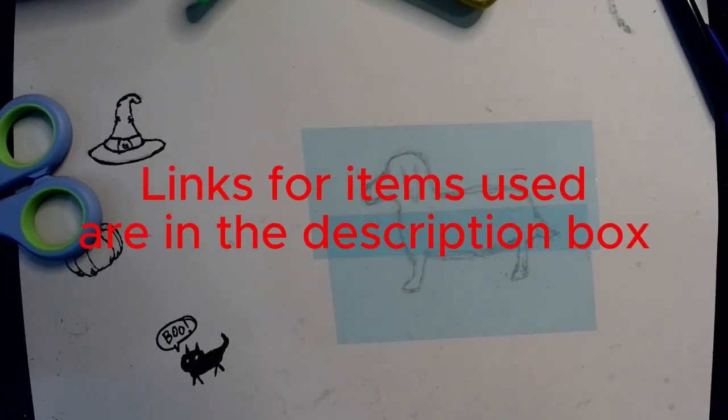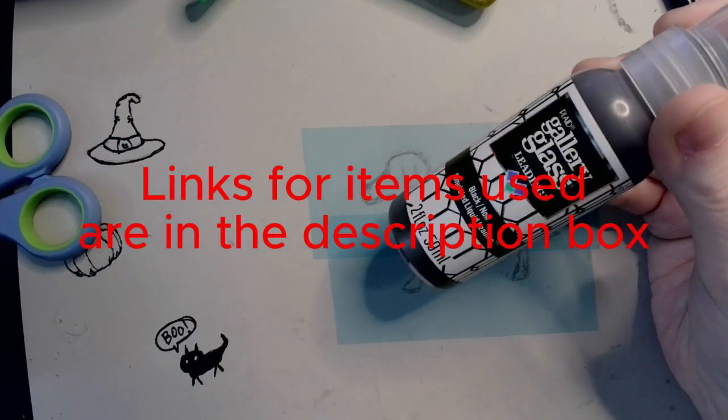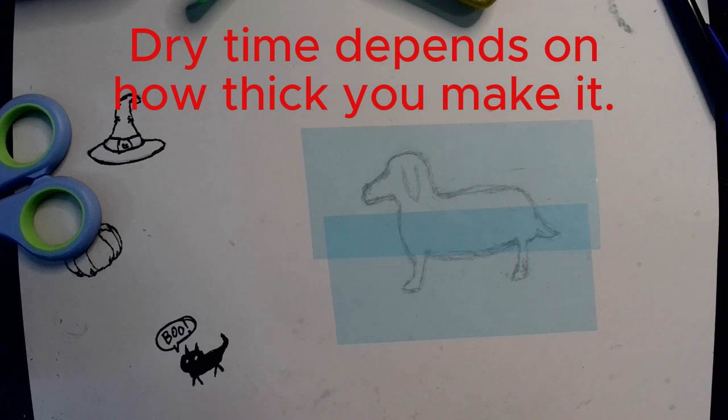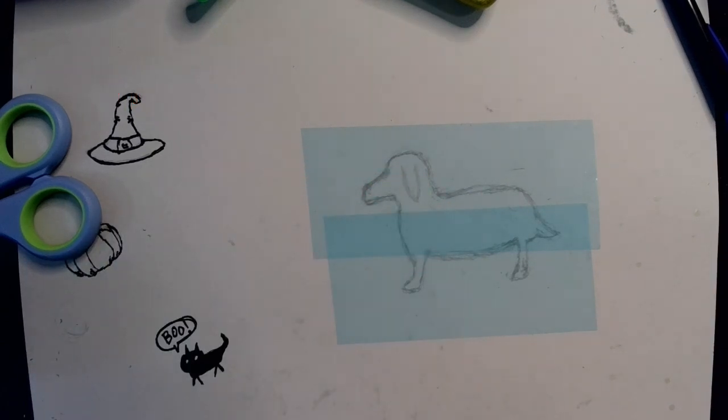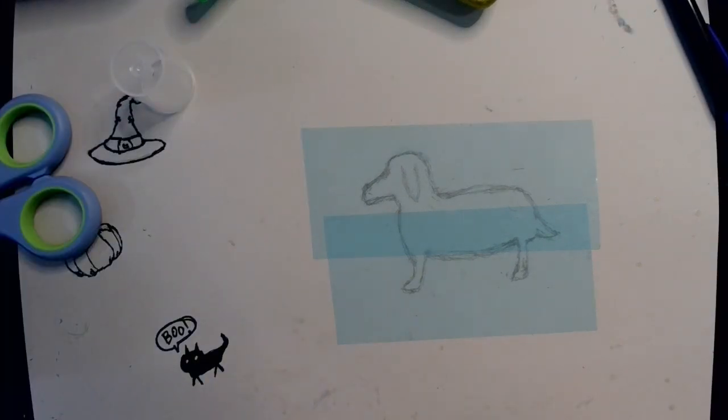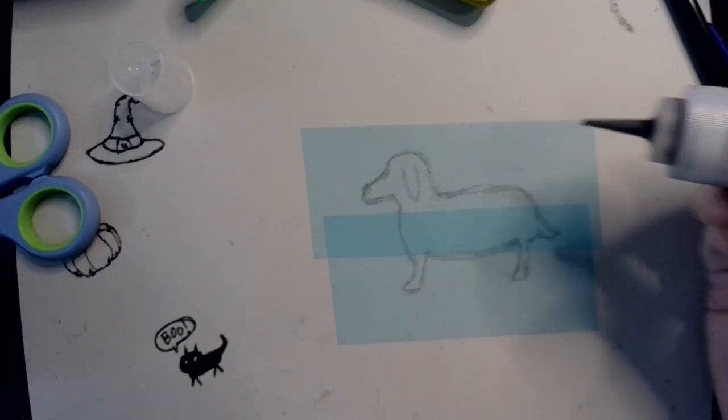what I have here is some gallery glass black simulated liquid leading. And what this is used for is like faux stained glass and whatnot. It takes about 20 to 30 minutes to cure.